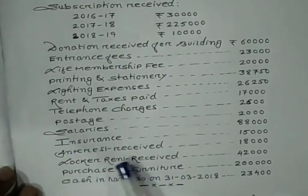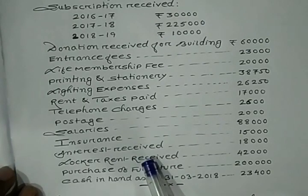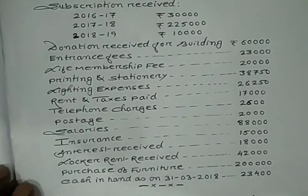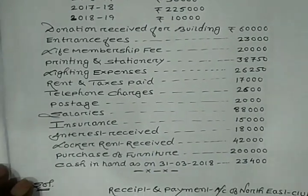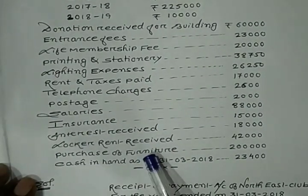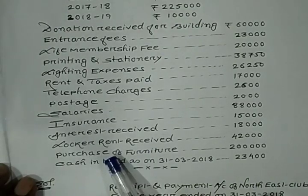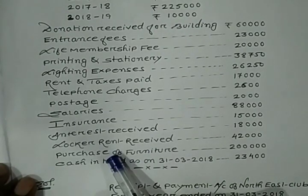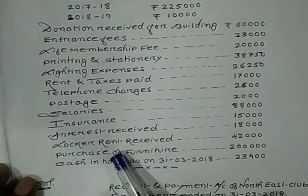Locker rent — this is also received, so it goes on the debit side of Receipt and Payment Account. Then purchase of furniture — you have purchased furniture, so what nature is this? It is capital nature. Capital nature — is it capital receipt or capital payment? It is capital payment.